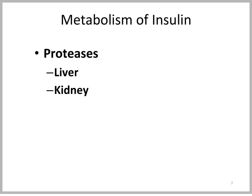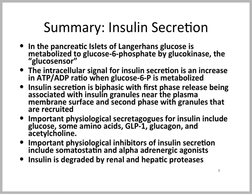The metabolism of insulin occurs through proteases which are located in the liver and in the kidney. In summary, in the beta cells of the pancreatic islets of Langerhans, glucose is metabolized to glucose 6-phosphate by glucokinase. Glucokinase is also called the glucose sensor. Glucose needs to be metabolized in order to lead to the release of insulin. The intracellular signal for insulin secretion is an increase in the ATP-ADP ratio when glucose 6-phosphate is metabolized through glycolysis, TCA cycle, and electron transport chain.